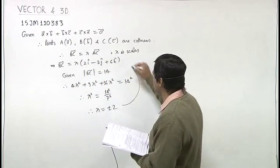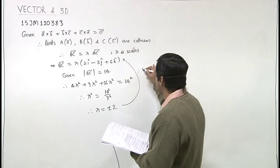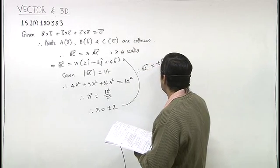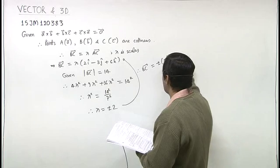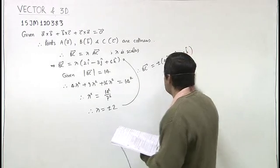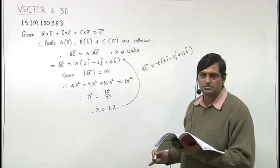Now substituting lambda equals plus minus 2, we find BC is plus minus 4i cap minus 6j cap plus 12k cap. This is the answer.